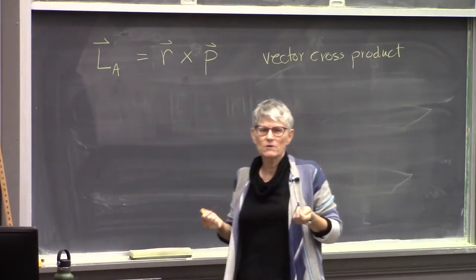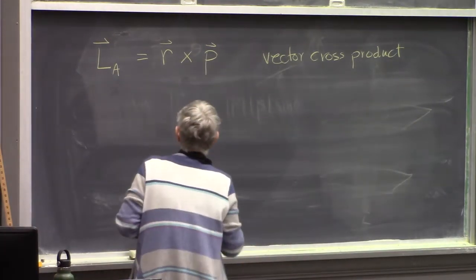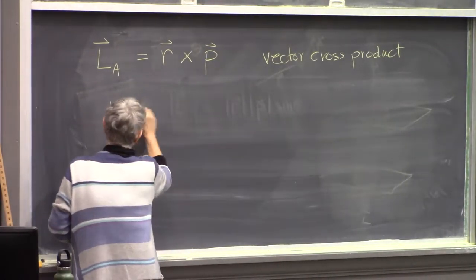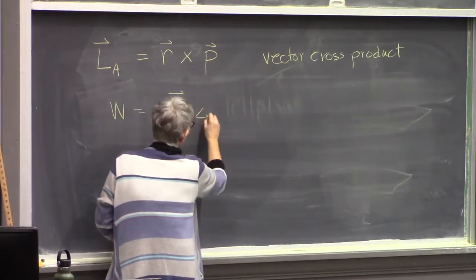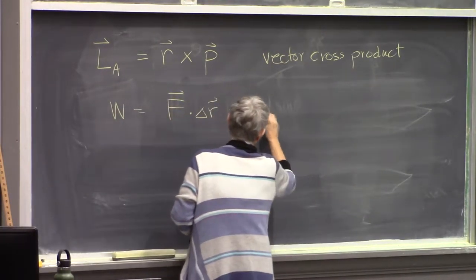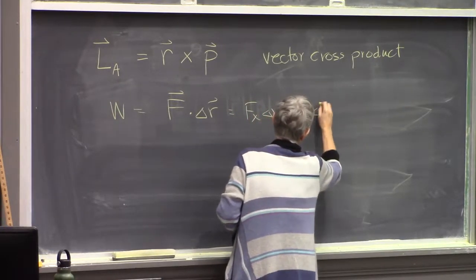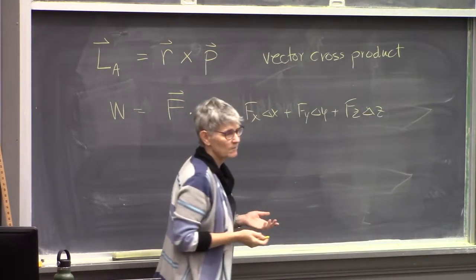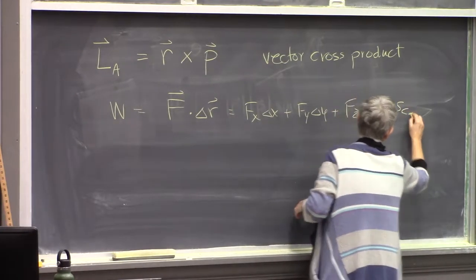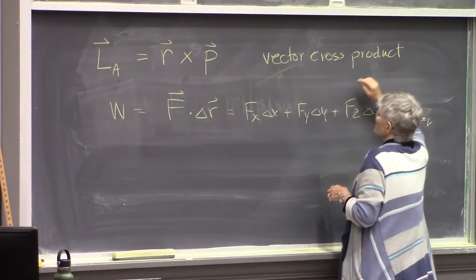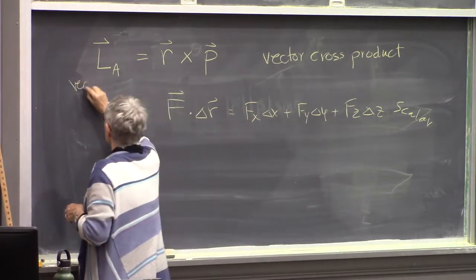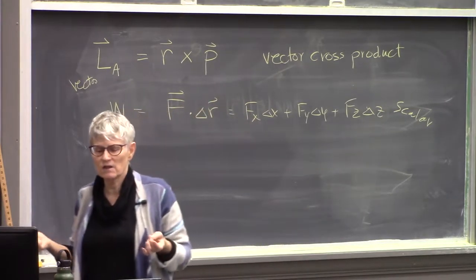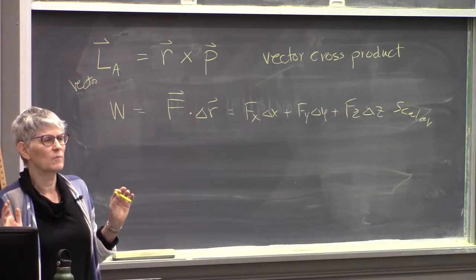For the Ferris wheel example, the blue vector is p and the angular momentum is out of the board — perpendicular to both r and p. R and p define a plane, and angular momentum is a vector perpendicular to that plane. The dot product, used for work, gave: F·Δr = Fx·Δx + Fy·Δy + Fz·Δz, which was a scalar. The cross product instead gives a vector perpendicular to both input vectors.